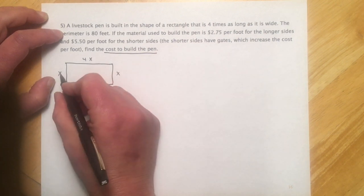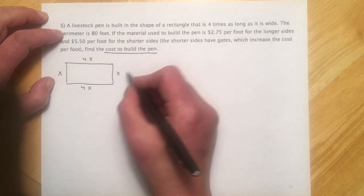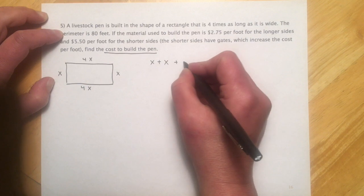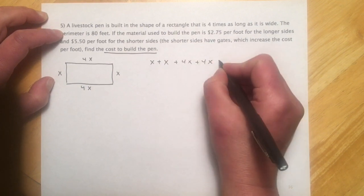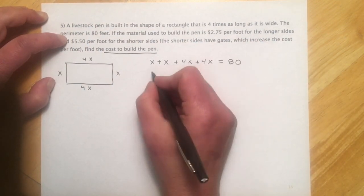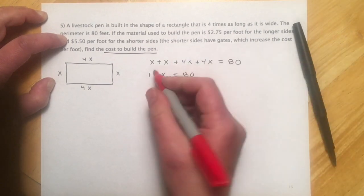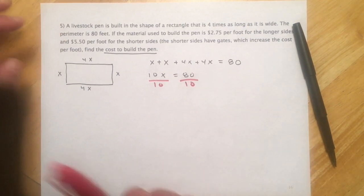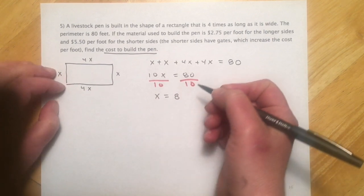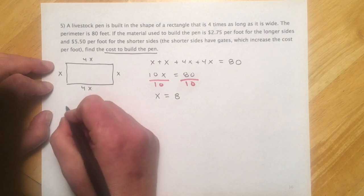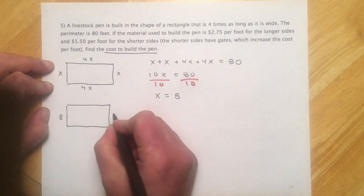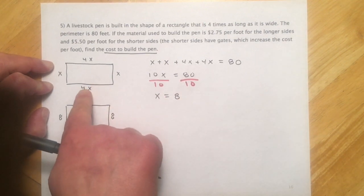I have x plus x, that's 2x. 4x plus 4x. That equals 80 feet. So 2, 4, and 4 makes 10x equals 80. Divide by 10, and we get x equals 8. So this side is 8, so is this side. And then if x is 8, 4 times 8 would be 32.